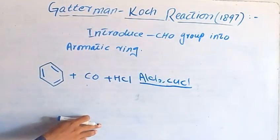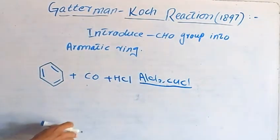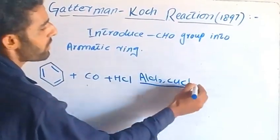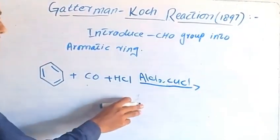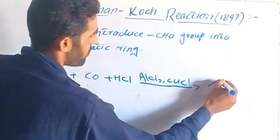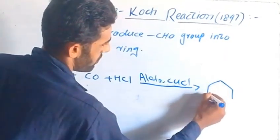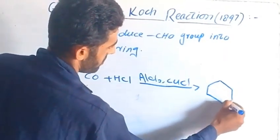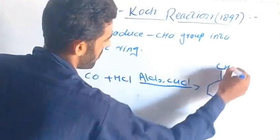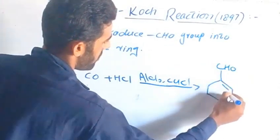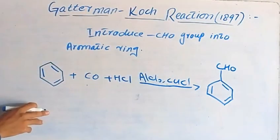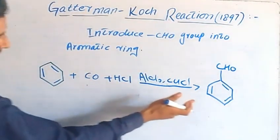It acts as a co-catalyst because the product is obtained from the formation attached to the benzene ring. It has the aldehyde functional group attached to the benzene ring. This is the Gattermann-Koch reaction.